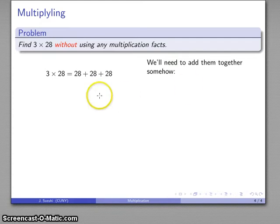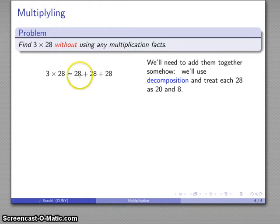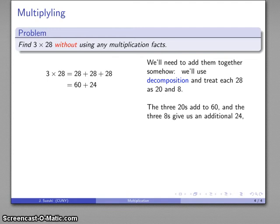What I might do in this particular case is use decomposition. Each of these is a 20 and an 8, so what I have is I have three 20s, so I might count 20, 40, 60. And then those 8s, 3 8s, 8, 16, and 8 is 24. And I'm going to add those two together, 60 and 20 is 80, and 4 gives us 84 as our product.